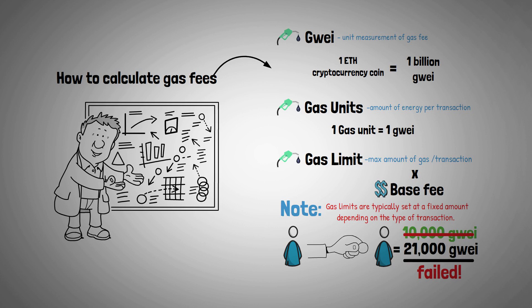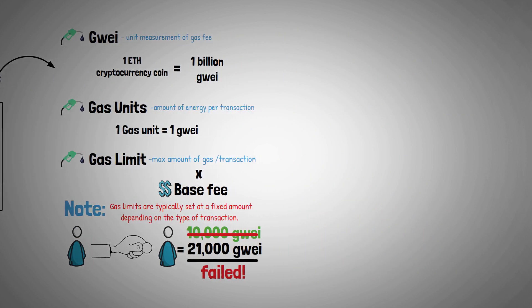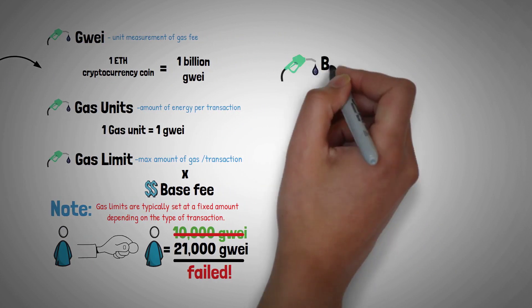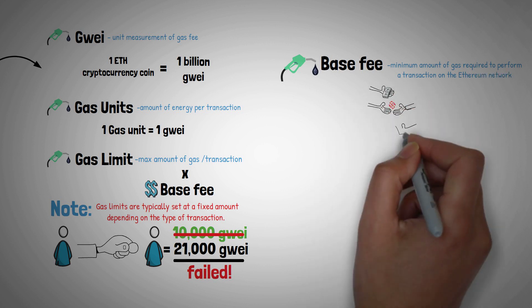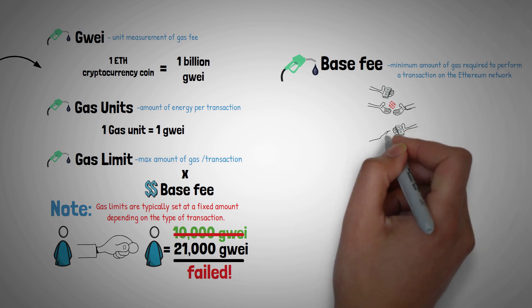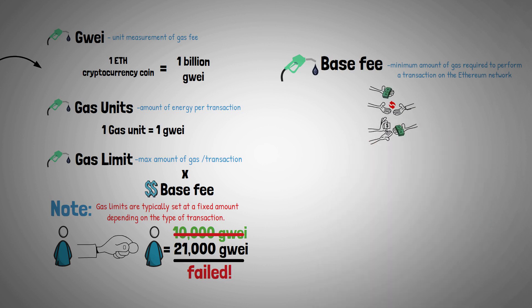Generally, your wallet should indicate the gas limit for the transaction you want to make. Then we have base fee: the minimum amount of gas required to perform a transaction on the Ethereum network. Base fees are determined by supply and demand, and are adjusted based on the number of transactions happening on the network in real time. It's like the base fare for a taxi ride.